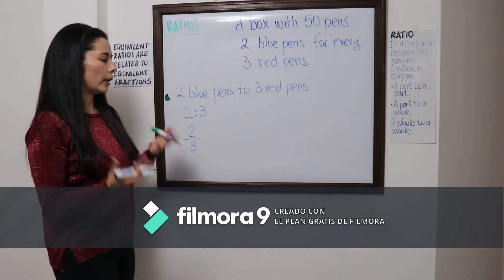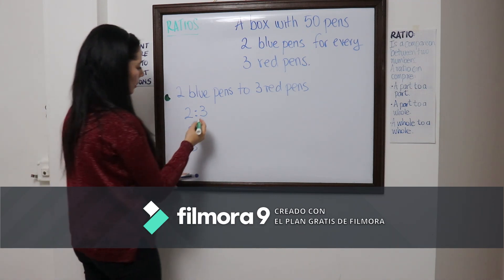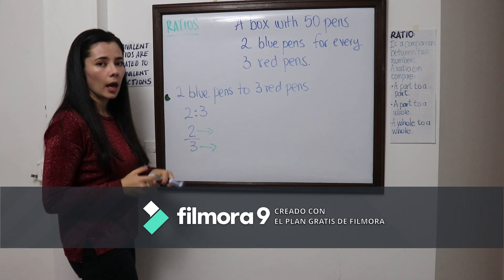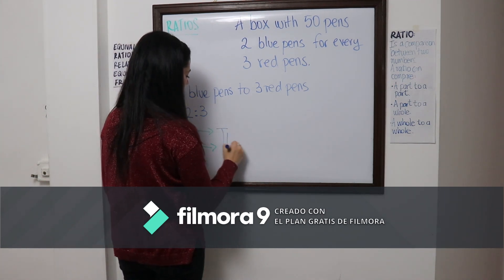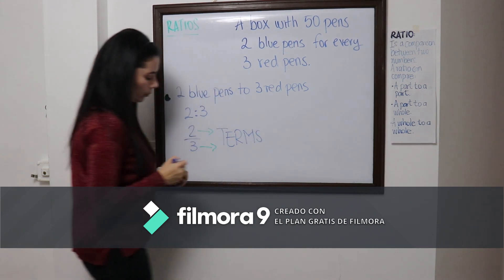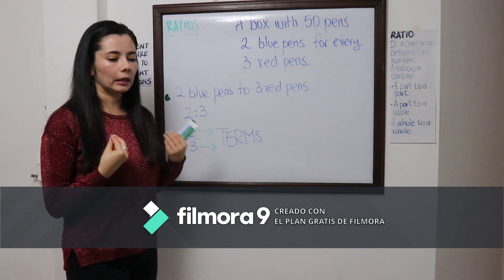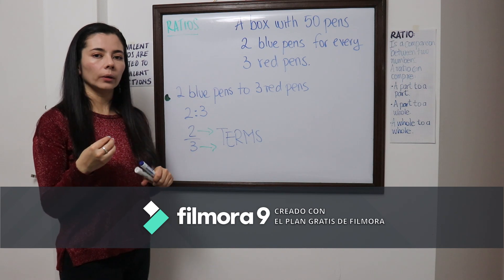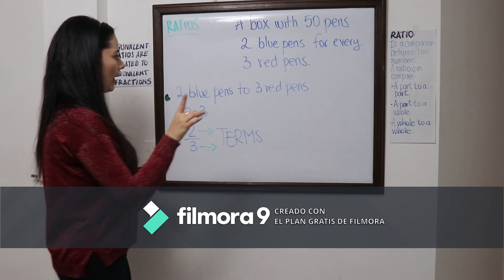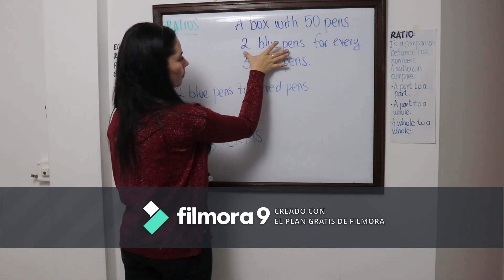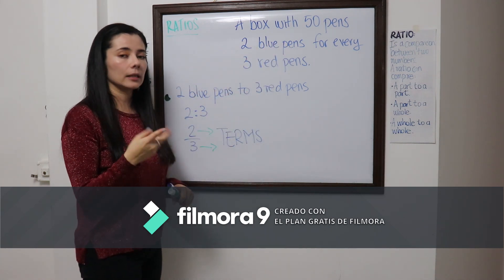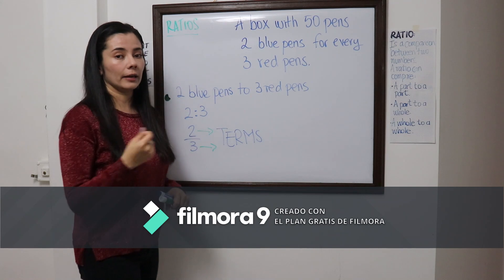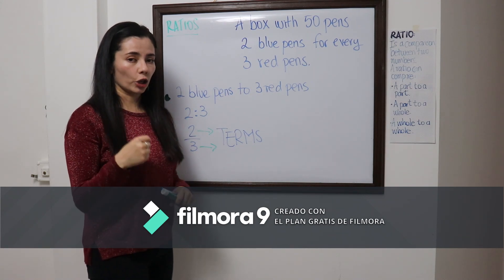We need to understand that both numbers are called the terms of the ratio. What we need to be clear about is how we are going to write down the ratio every time. The number at the beginning is the first term in the ratio, and the number at the end is the second term in the ratio.